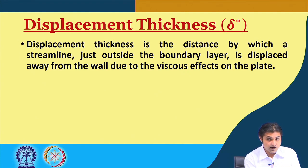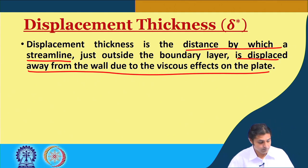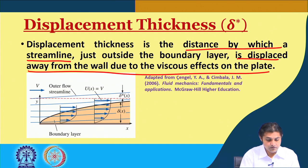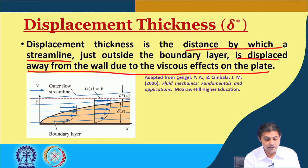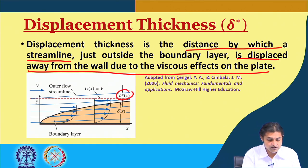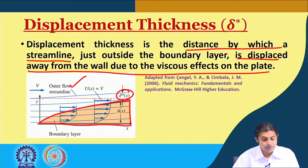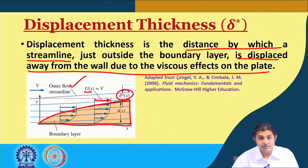Displacement thickness is the distance by which a streamline just outside the boundary layer is displaced away from the wall due to the viscous effects on the plate. What exactly is that thickness delta dash of x? Outside the boundary layer, the velocity is exactly u as a function of x.